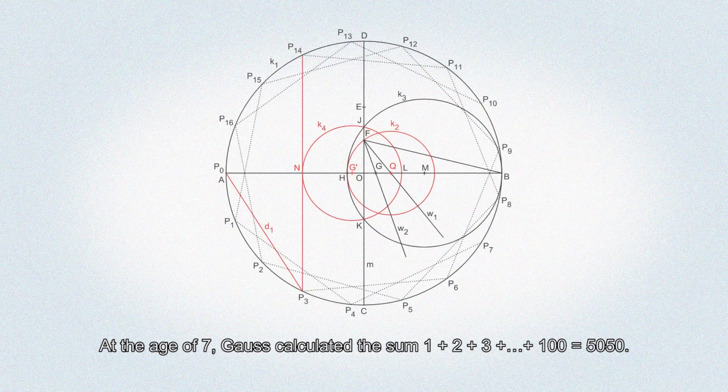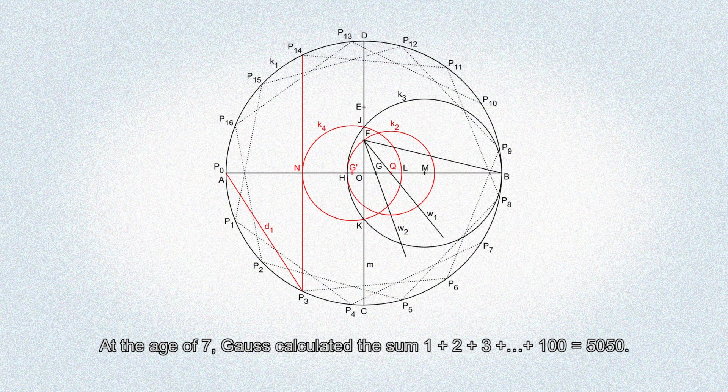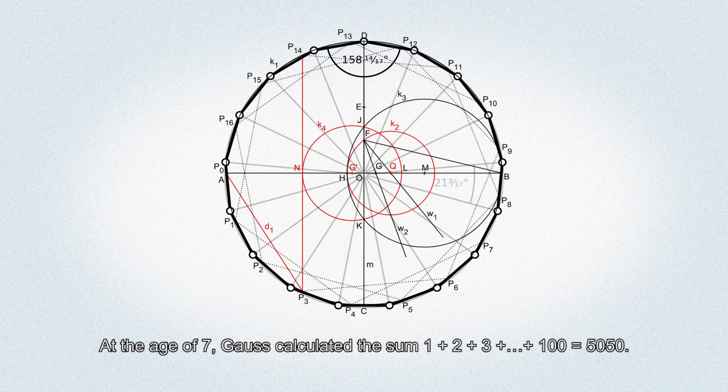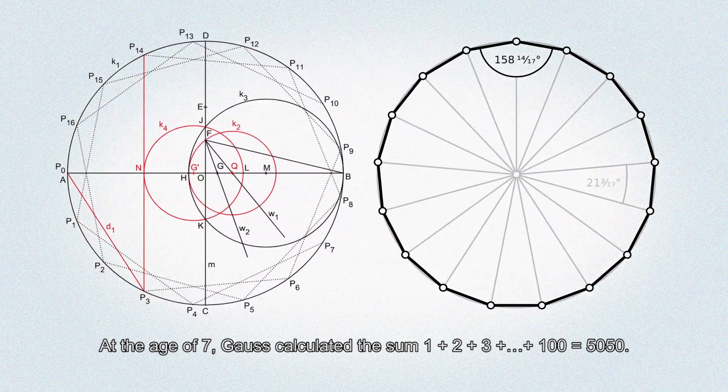At the age of 7, Gauss calculated the sum 1 plus 2 plus 3 plus up to 100 is equal to 5050.